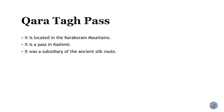Karatak Pass is located in the Karakoram mountains. It is a pass in Kashmir and it was a subsidiary of the ancient Silk Route.